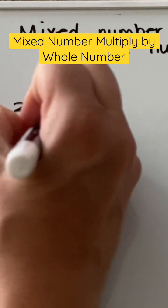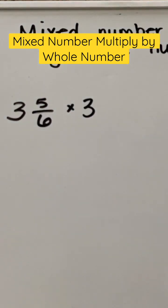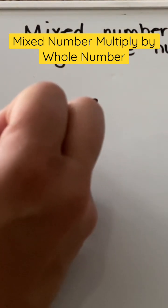3 and 5/6 times 3. Take our denominator and we multiply it by our whole number, and then we add whatever is on top in our numerator.